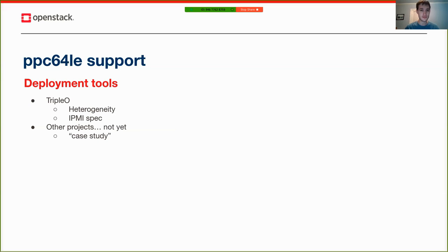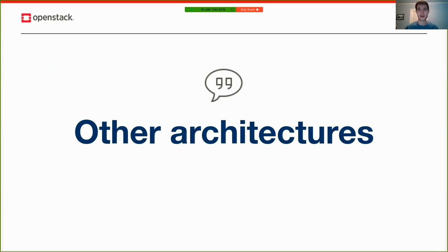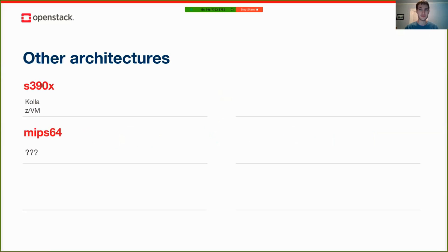Now I'll talk about architectures besides Power and ARM, because the SIG is not limited to just those two. For s390x — IBM mainframe — there has been some work in Kolla, mostly focusing on dependency issues and minor packaging issues. There's also a team that works on z/VM support in Nova, but in general s390x is not really a main focus for anyone in OpenStack at this time. For MIPS64, I do know of one vendor working on adding support in Nova, specifically in the Nova libvirt driver. If anyone employed by that vendor is watching, please reach out — we'd love to hear about what you're doing and track that effort.